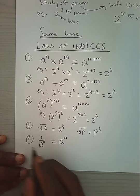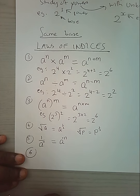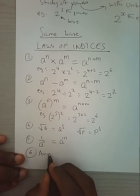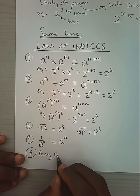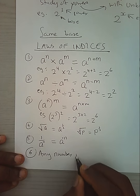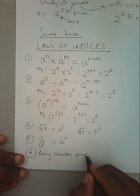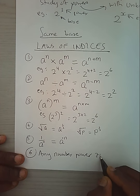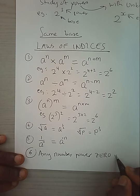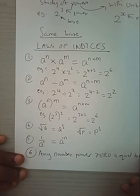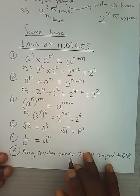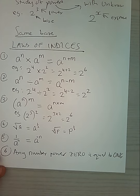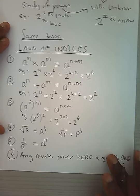And finally, any number to power 0 is equal to 1. Now these are our 6 laws.